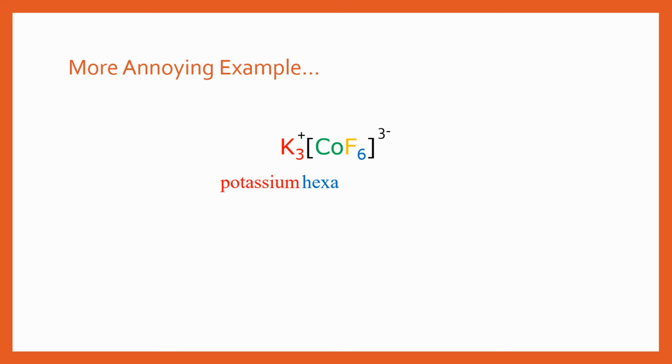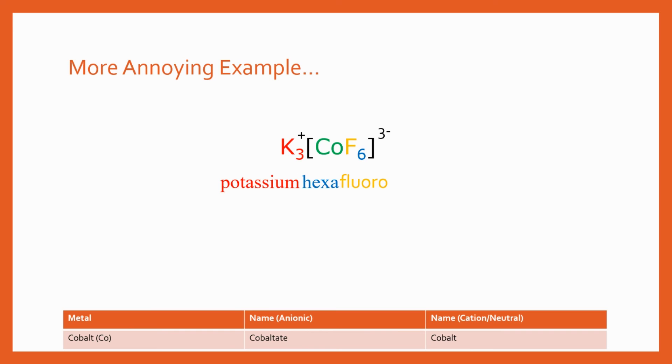That is now important and you'll see why in just a second. So we've got potassium at the start of the name then we're going to have hexa for the six F and then fluoro. Then we look at the list here—now we've got to decide if it's going to be cobaltate or cobalt and we can see that we've got that three minus there so we're going to choose cobaltate.